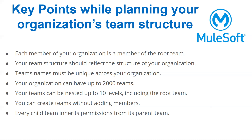Every child team inherits permissions. So when you create a team structure, you start without members and then assign proper permissions to each and every team. You can keep some global governance policies in the parent - you can assign those permissions to the root team. From the root team, everybody will inherit. For example, if all organization users should have a certain access, you don't need to go to each and every team to assign it - you can keep it in the root team and everybody will inherit from there.